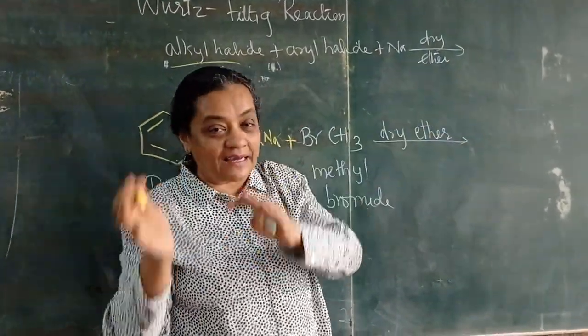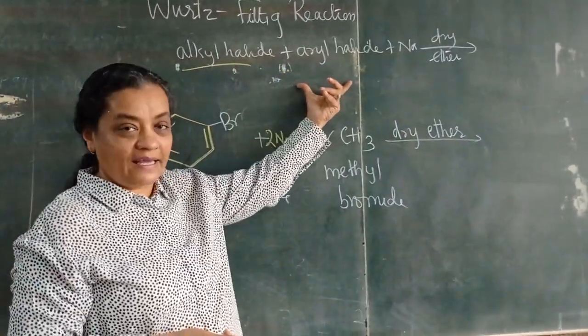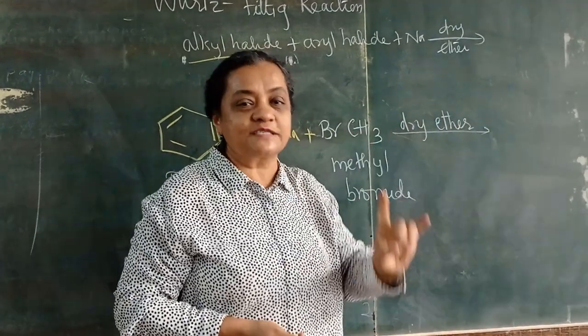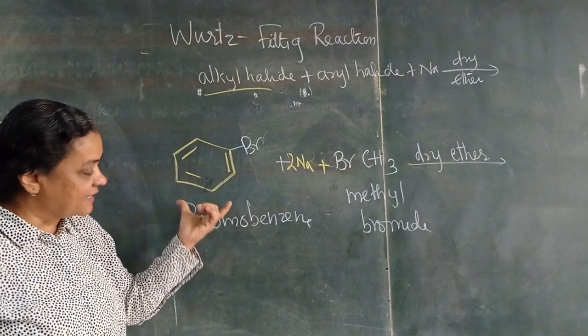Dono combine karke, alkyl halide plus aryl halide plus sodium in dry ether. This is known as Wurtz-Fittig reaction. Ab dekhein yaha par ek aryl halide hai.